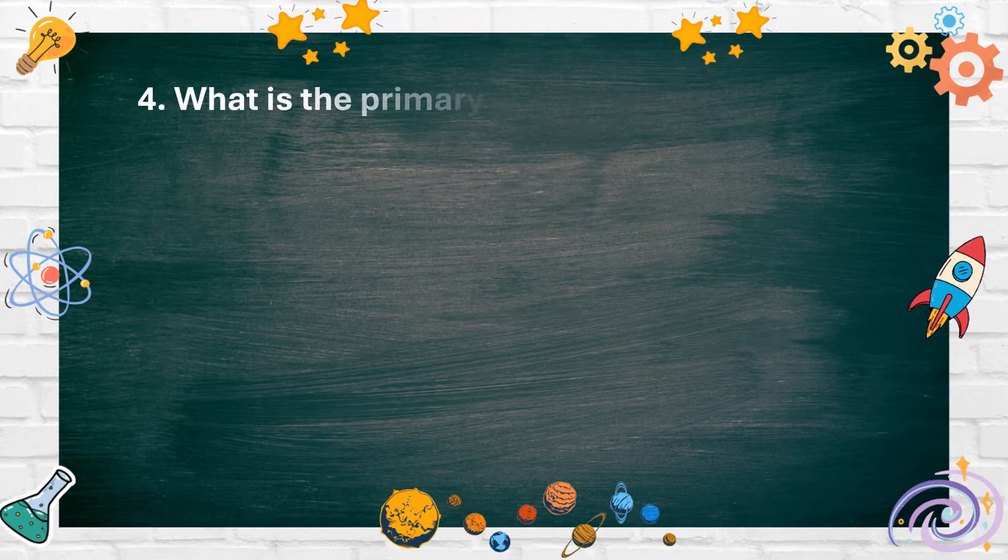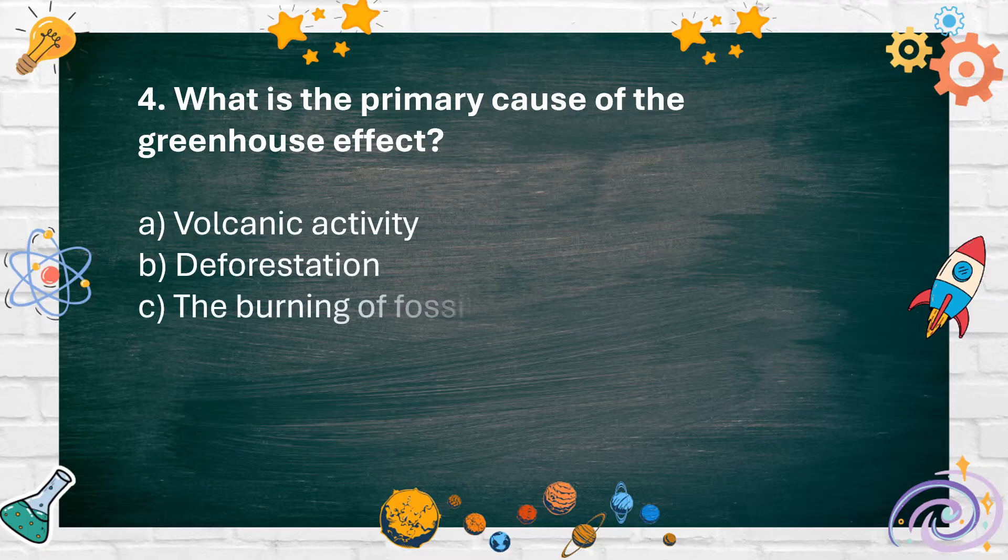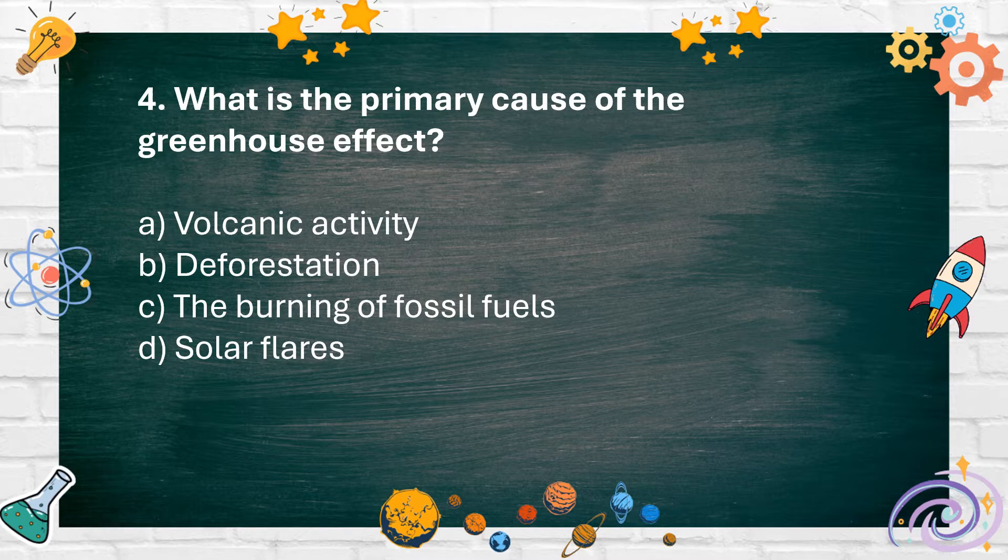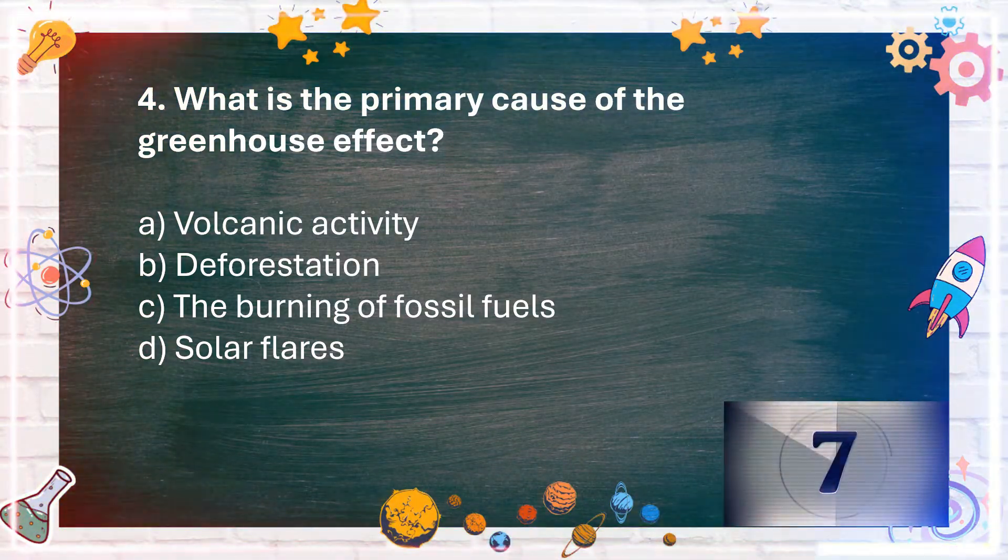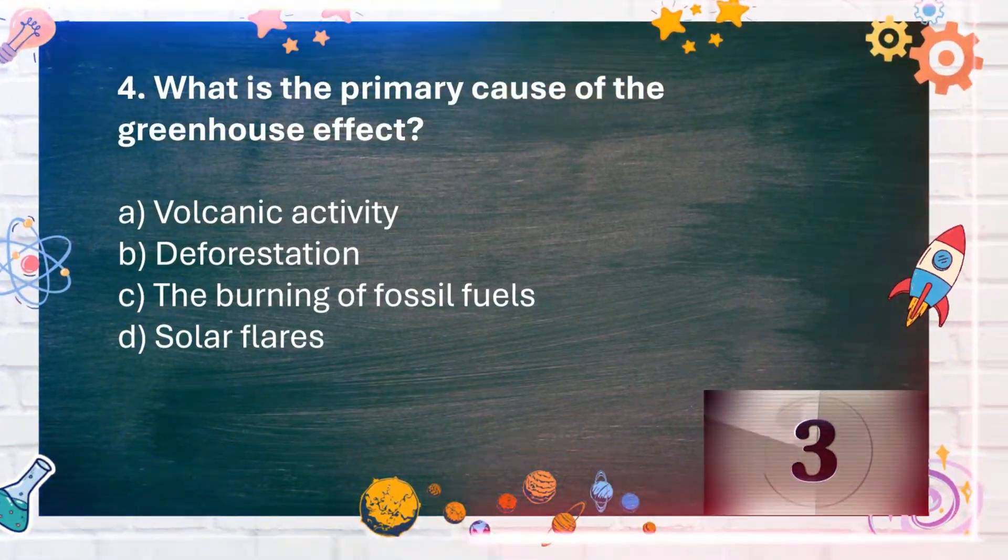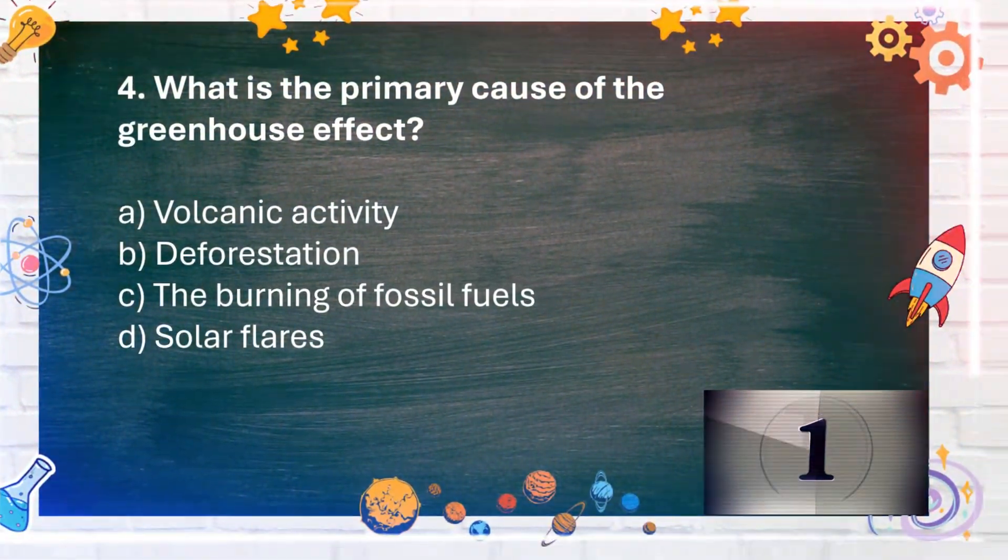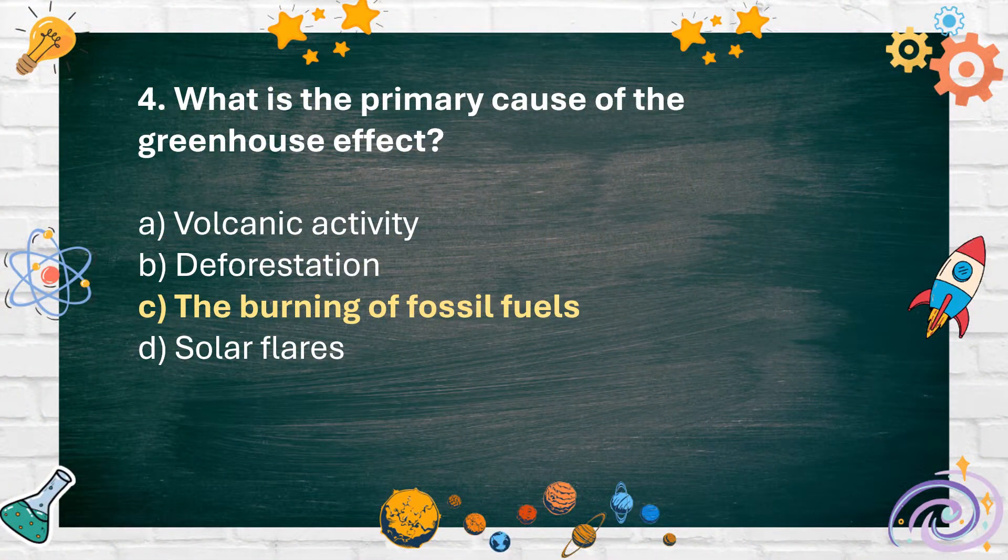Number 4: What is the primary cause of the greenhouse effect? A. Volcanic activity, B. Deforestation, C. The burning of fossil fuels, D. Solar flares. The answer is C. The burning of fossil fuels.